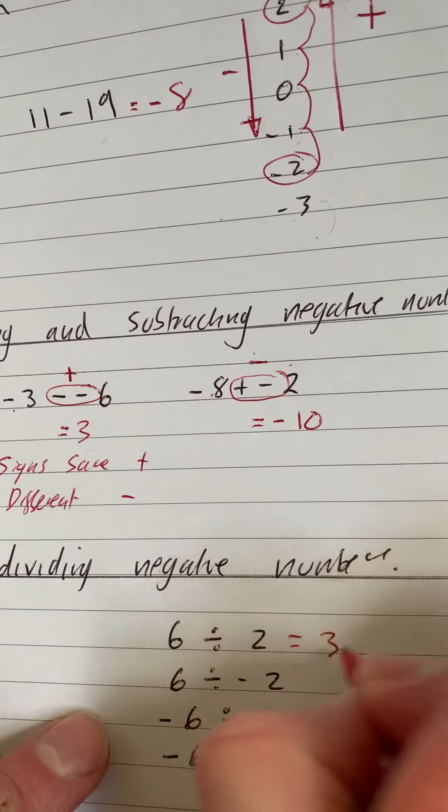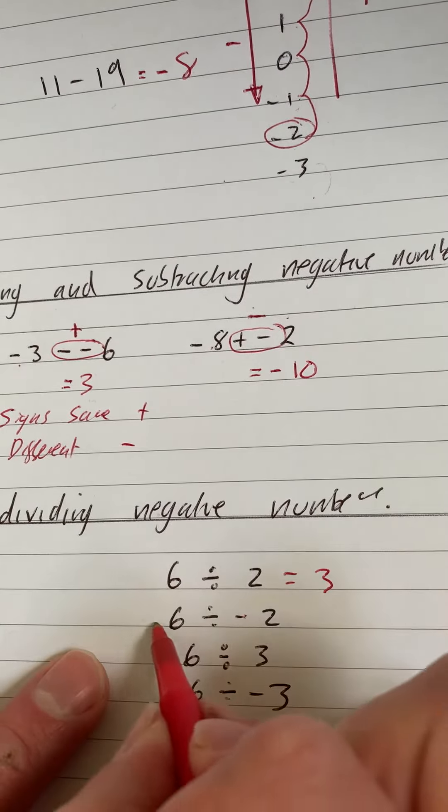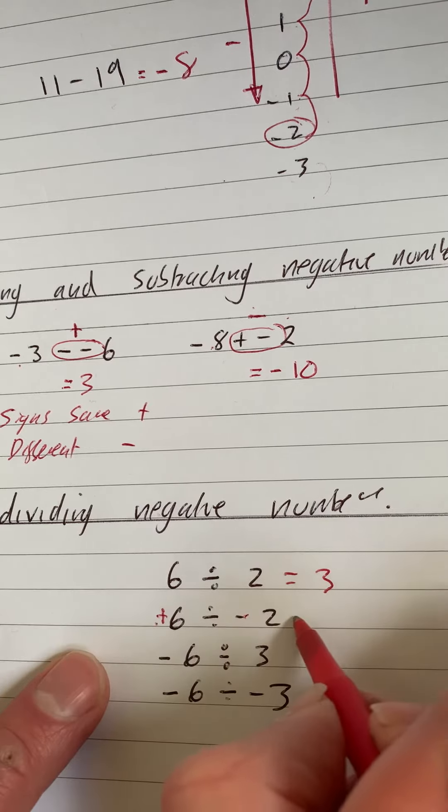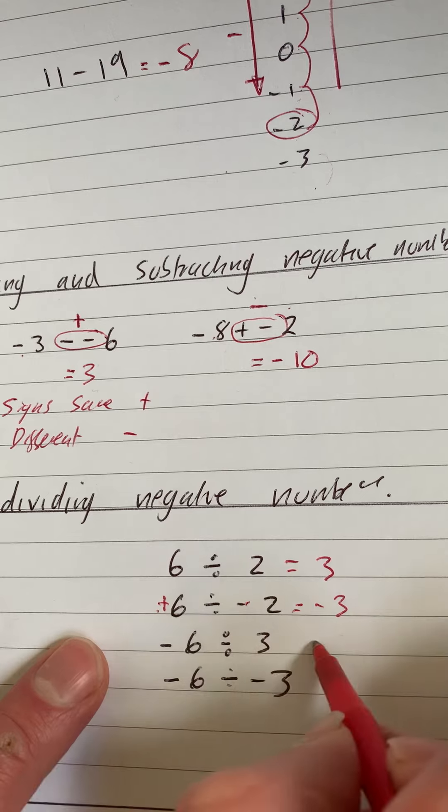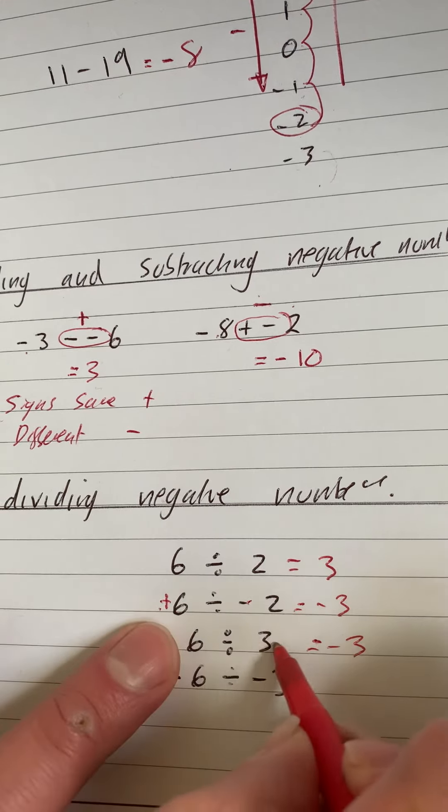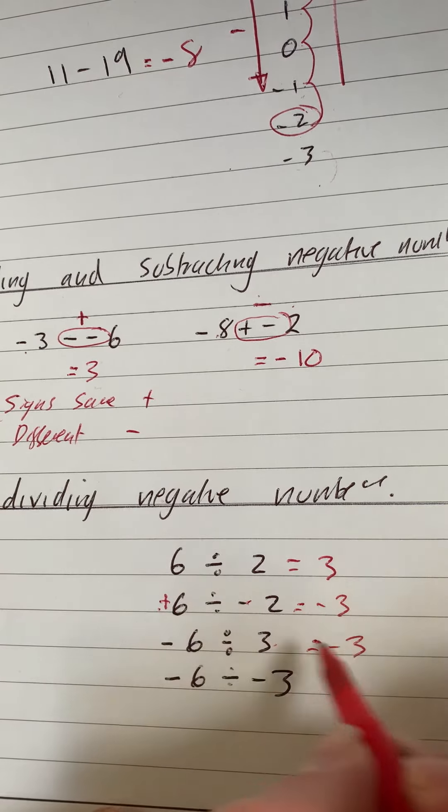So 6 divided by 2 is 3. Now if they're different, like this, because this is a plus, we're going to have -3. If they're different, we get -3. So we do 6 divided by 3, we then look at the signs, the difference, we put a minus.